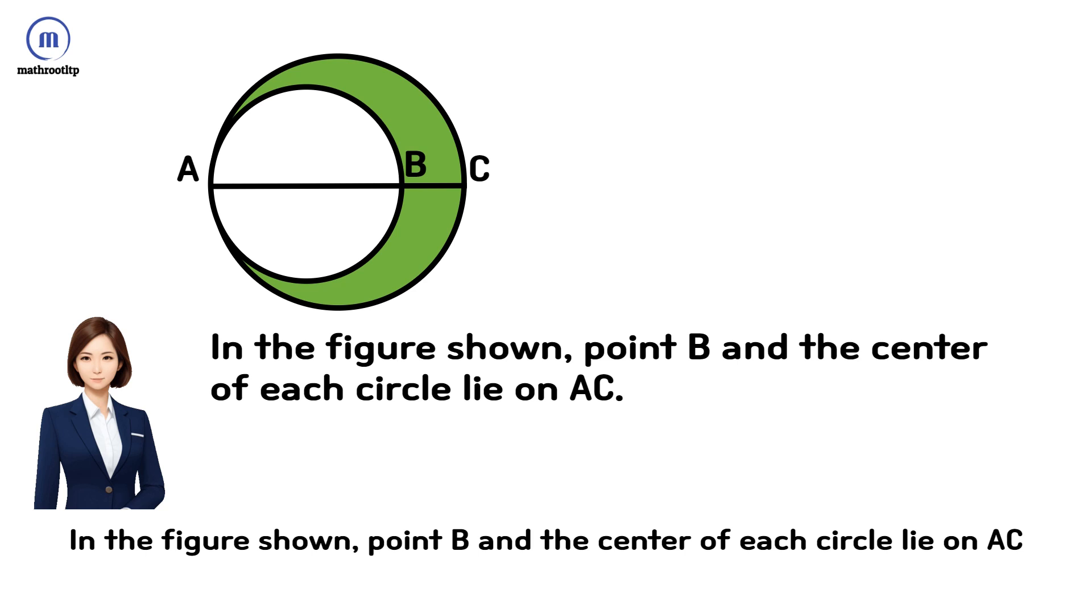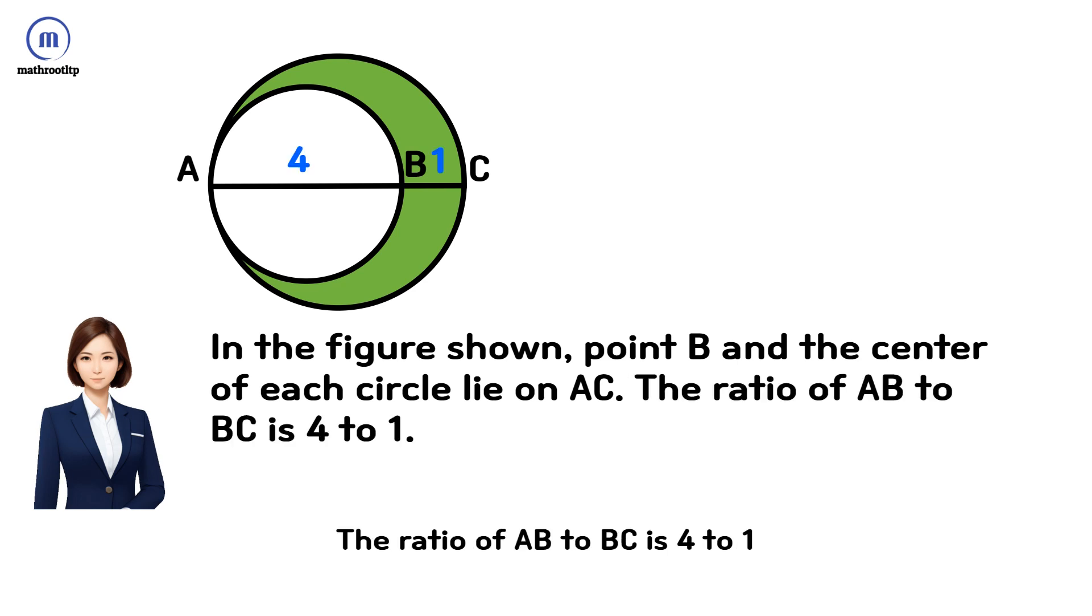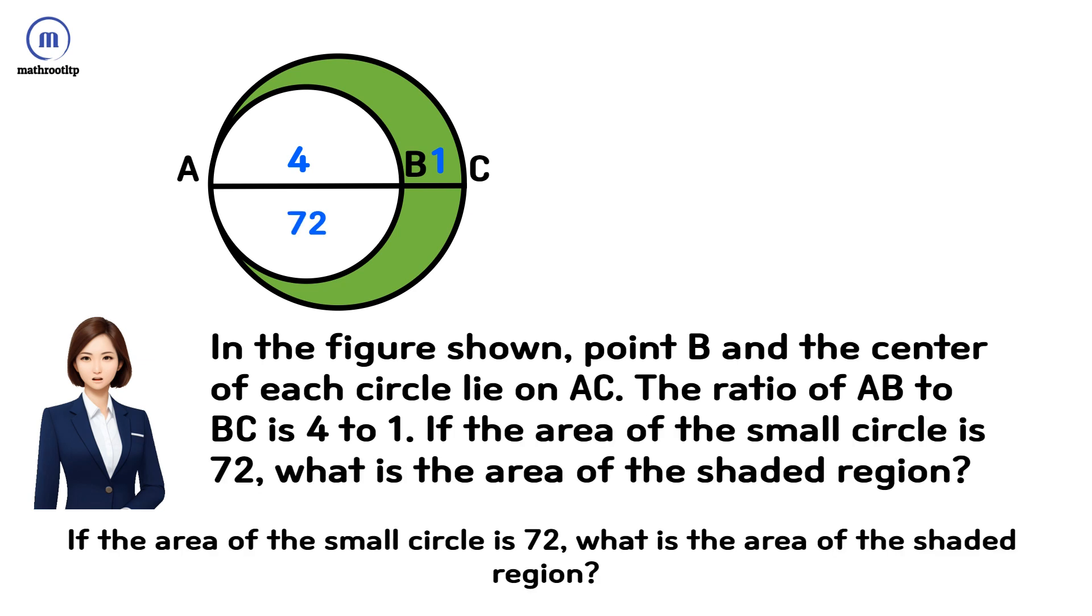In the figure shown, point B and the center of each circle lie on AC. The ratio of AB to BC is 4 to 1. If the area of the small circle is 72, what is the area of the shaded region?